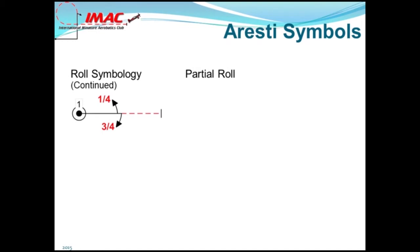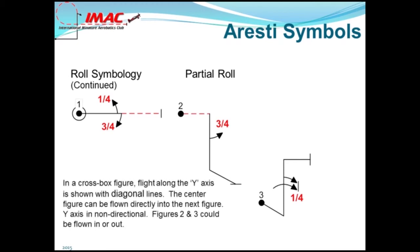Partial rolls are notated by the fraction. Figure one is a one-quarter roll, followed by an opposite three-quarter roll. Figure two is a downline with a three-quarter roll pulling to a crossbox or y-axis exit. Figure three is a vertical upline with an upright exit on the x-axis. In a crossbox figure, flight along the y-axis is shown with diagonal lines. The center figure, figure two, can be flown directly into the next figure. The y-axis is non-directional. Figures two and three could be flown in or out.